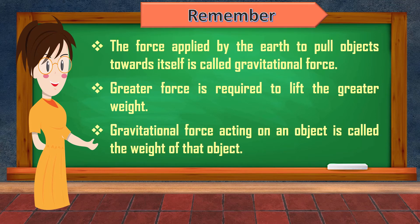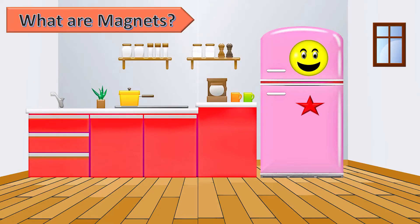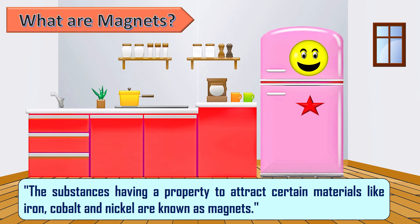Gravitational force acting on an object is called the weight of that object. Before learning about magnetic force, we will first see what magnets are. Do you know how metal stickers stick to the refrigerator? The metal sticker sticks to the refrigerator with the help of a small magnet fixed on the opposite side of the sticker. The substances having a property to attract certain materials like iron, cobalt and nickel are known as magnets.